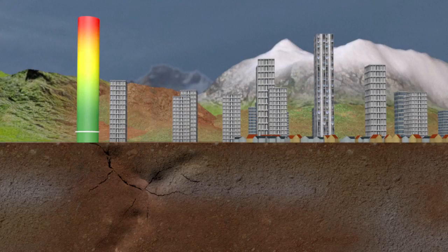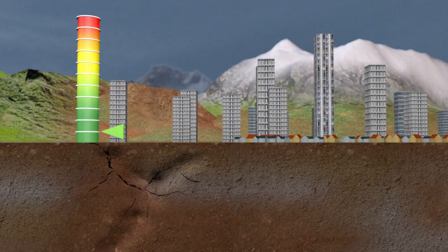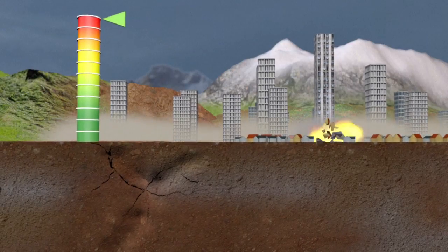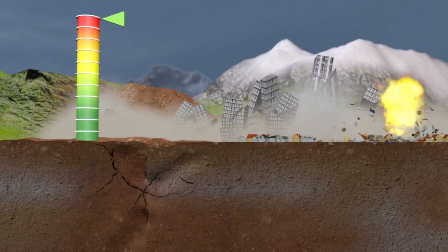The European Macroseismic Scale, meanwhile, rates intensity. In other words, possible consequences. There are 12 levels. One indicates the earthquake cannot be felt, while 12 indicates a total change in landscape.